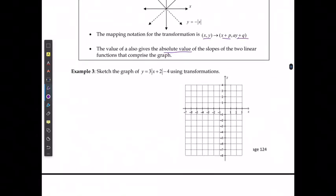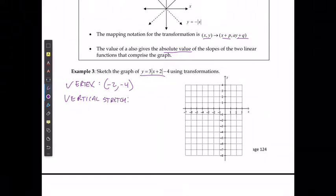So if I am using this information to sketch the graph of y equals 3 times the absolute value of x plus 2 minus 4 using transformations. Well, the first thing I'm going to state is that I have a vertex at negative 2 and negative 4. I have a vertical stretch of 3. So I'm going to start at my vertex, negative 2, negative 4.